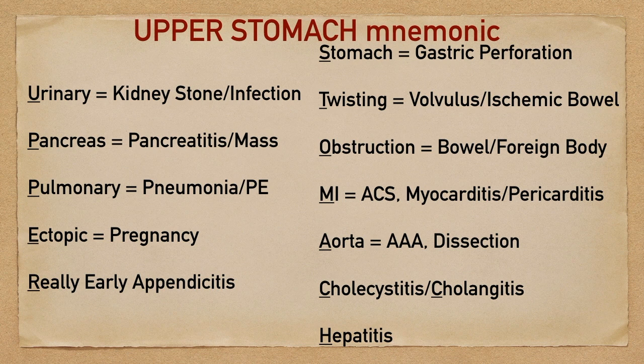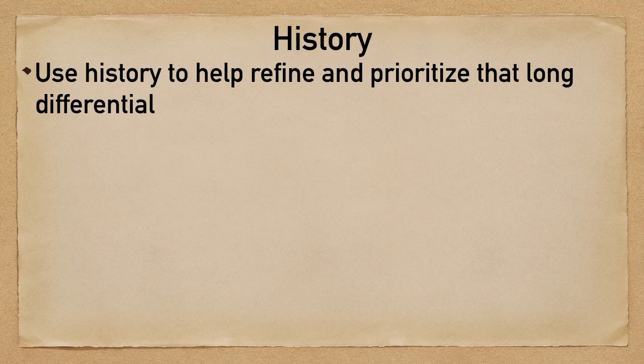Hopefully this mnemonic will help you remember the main emergent causes to upper abdominal pain. It's not to say that other causes can't become emergent or that there aren't other emergent causes, but these are the main ones. With that list of potential diagnoses being so long, this will help organize it by organ or by system, so that way you're less likely to miss something bad. Now that you have done the primary survey, possibly performed that chart review, and you're thinking about the UPPER STOMACH mnemonic, it's time to obtain that history from the patient.